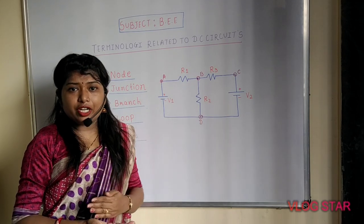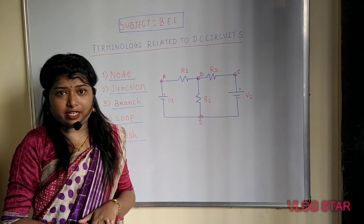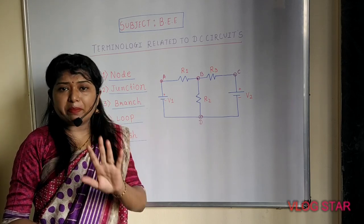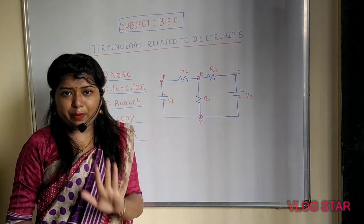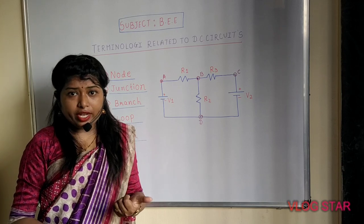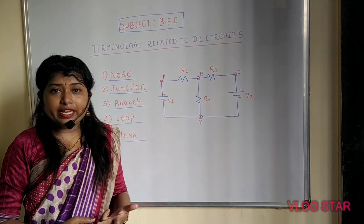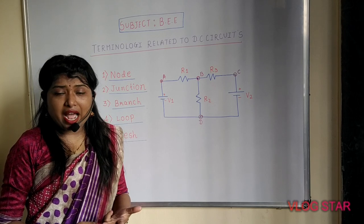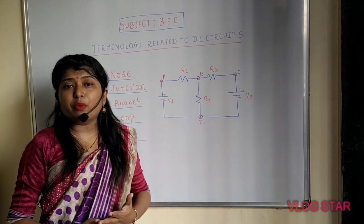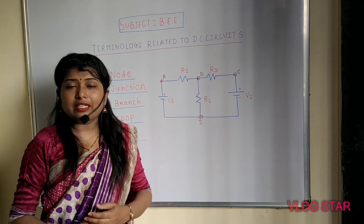I hope you all have understood the terminology related to the DC circuit. To recap, you have to remember five important terms: node, junction, branch, loop, and mesh. Thank you.